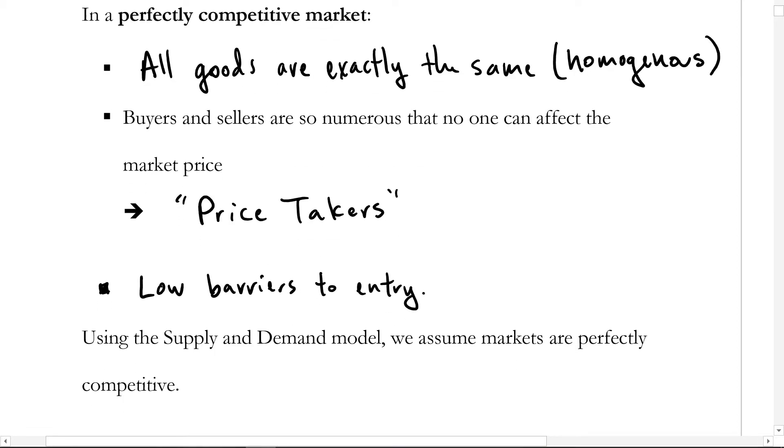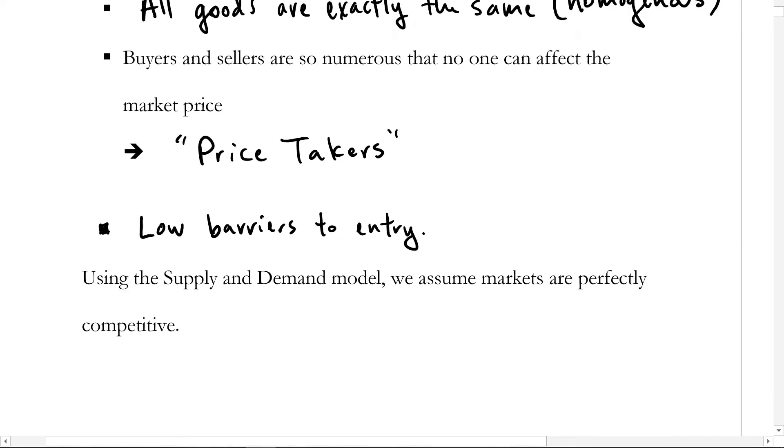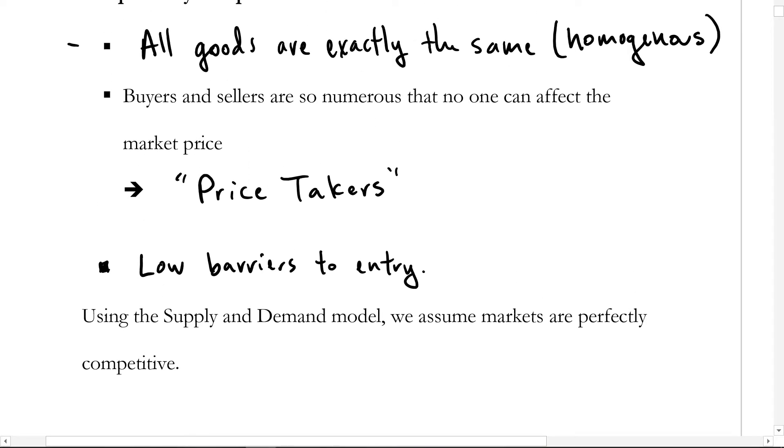The other important characteristic of perfectly competitive markets is that there are low barriers to entry, which makes it easy to have a number of sellers in a market. Let's talk about a couple examples here. Keep in mind, as we're going through this chapter, we're assuming in a supply and demand framework that markets are perfectly competitive. And the more competitive the markets are, the more appropriate this type of analysis will be.